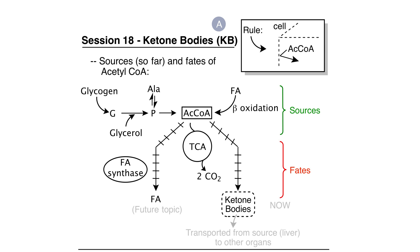If we follow the acetyl-CoA from beta-oxidation down into the TCA cycle, we see that it will be fully oxidized to carbon dioxide with the generation of a lot of energy that can be used for mechanical work, biosynthesis, and other things. A second source of acetyl-CoA is glycogen breakdown to glucose, or glucose can be directly imported into a cell and converted into acetyl-CoA.